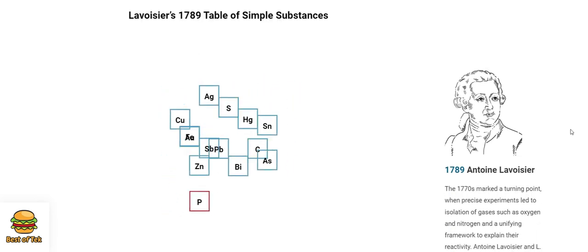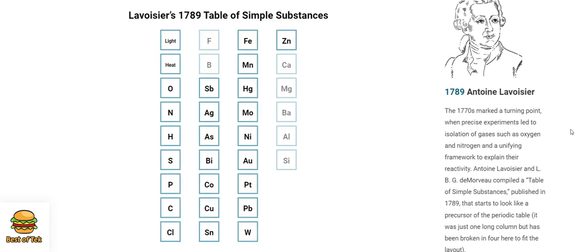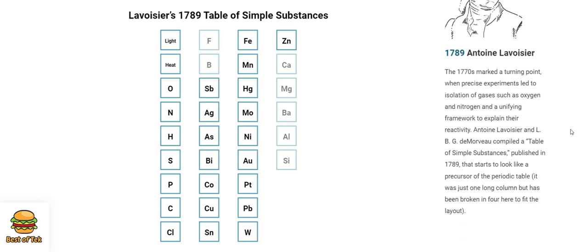1789. Antoine Lavoisier. The 1770s marked a turning point, when precise experiments led to isolation of gases such as oxygen and nitrogen and a unifying framework to explain their reactivity. In 1789, Antoine Lavoisier and LBG de Morveau compiled a table of simple substances, published in 1789, that starts to look like a precursor of the periodic table. It was just one long column, but has been broken in four here to fit the layout.